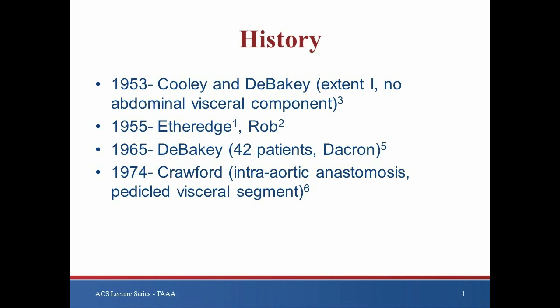That same year, Charles Robb, an English surgeon, also reported on his experience of 33 abdominal aortic aneurysms, 6 of which required lower thoracic aortic clamping approached via a thoracoabdominal incision. Robb's report predated Etheridge's manuscript and he is credited with the first description of a thoracoabdominal aneurysm repair.